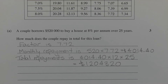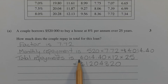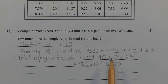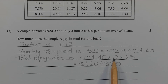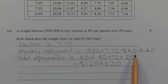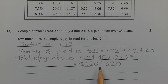The final step is to work out the total repayments. So that's the monthly repayment of $4,014.40, multiplied by 12 months in a year, multiplied by 25 years. That gives us a total of $1,204,320.